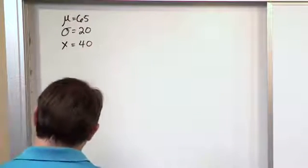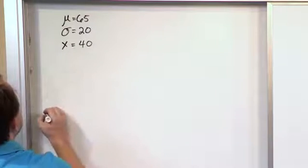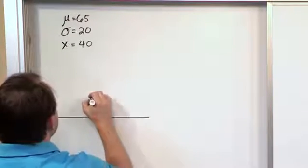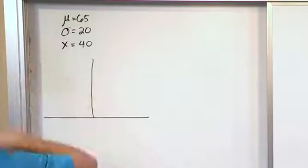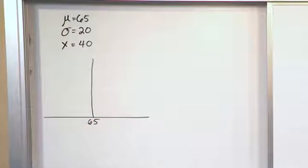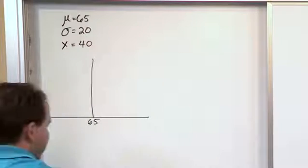It's basically exactly the same thing that we did last time. So let's start by drawing the original normal distribution. We can draw that here. And the mean is given in the original distribution, 65. So the entire thing is centered at 65. The standard deviation is 20. So if you think about it,